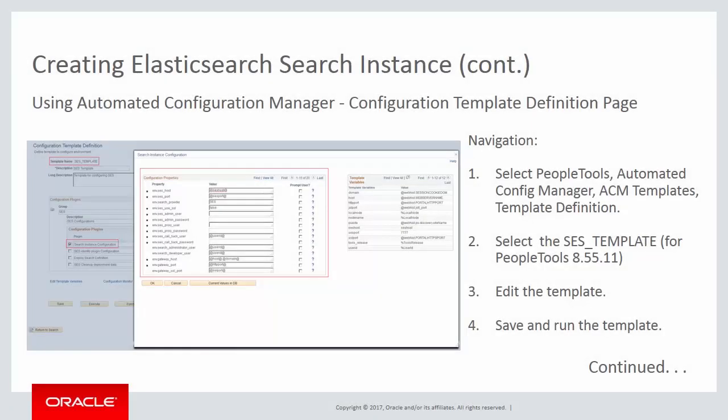The delivered SES_template consists of four plugins. You need to edit the search instance configuration plugin to specify properties for the Elasticsearch engine, and the Deploy Search Definition plugin to specify search definitions and categories for deploying and indexing. Since SES_template was used for configuring an SES search instance, ensure you review all properties. Pay attention to two key properties: ENV.PTSF_SEARCH_INSTANCE — specify the search instance name, and be sure to change it from the default value such as PTSF_default to PTSF_SEARCH, otherwise the Oracle SES instance will be updated rather than the Elasticsearch instance.